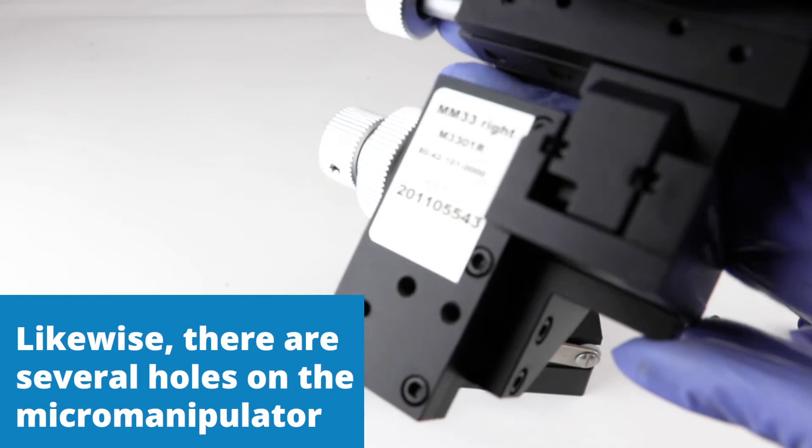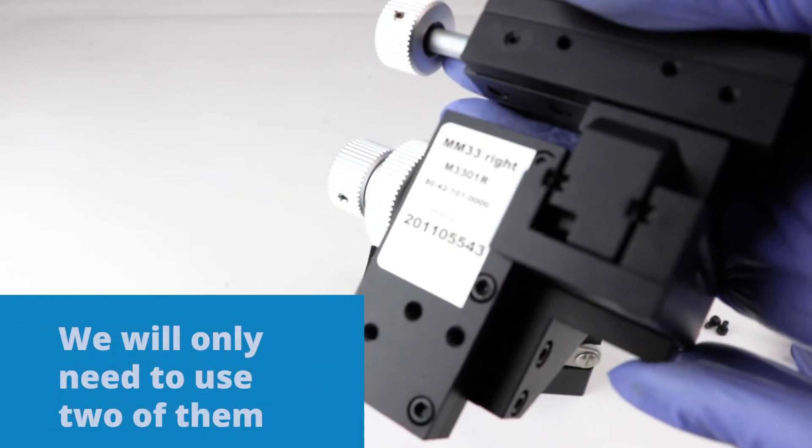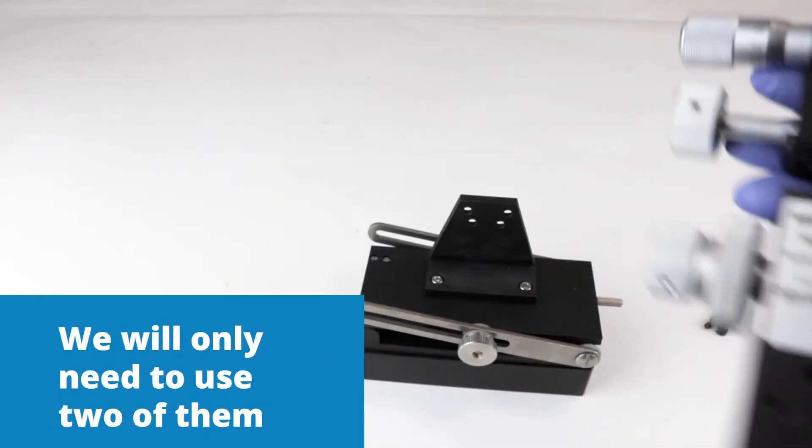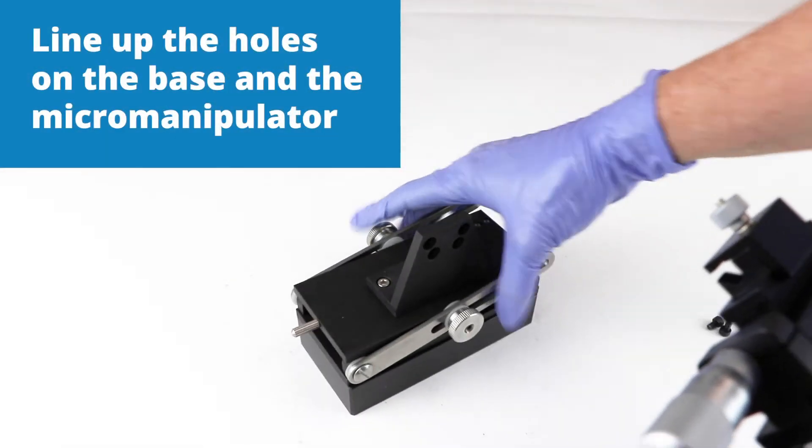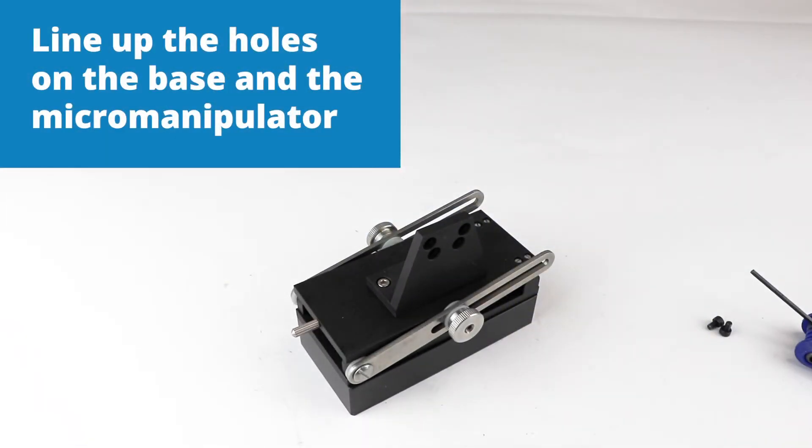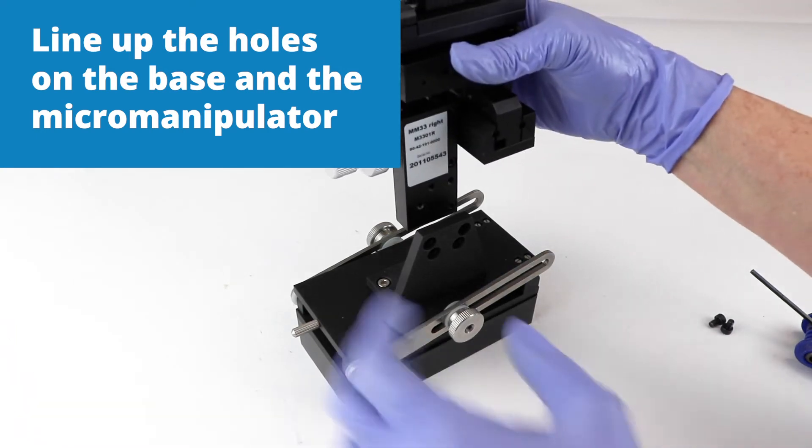Likewise, you have several holes in the bottom of the micromanipulator, and we're only going to use two of them. What we need to do here is line up the holes on the micromanipulator with the holes in the base.